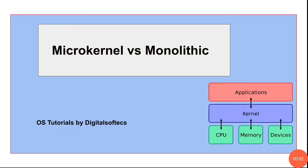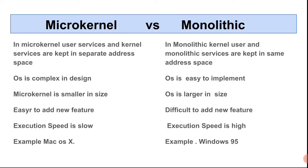Microkernel versus monolithic kernel — let's discuss the differences between these two operating systems. In the case of microkernel, the user services and kernel services are separate in address space. The microkernel is divided in architecture, so the services are divided — user services and kernel services are kept apart.